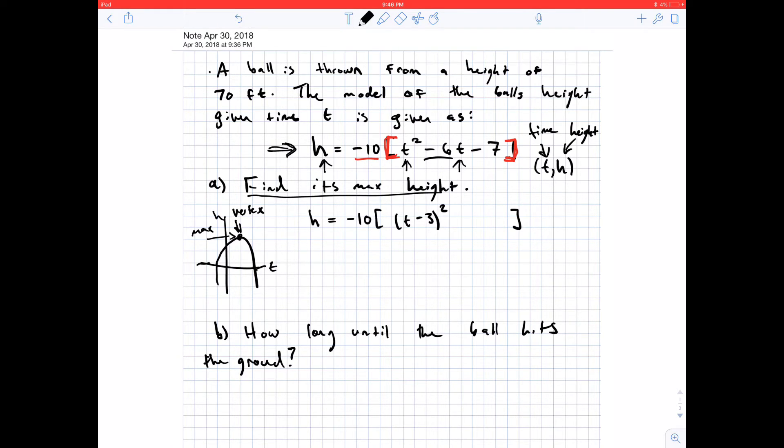And this constant here is going to be... Well, we know we want to get an exact copy of this equation down here. And I know that when I foil this out here, I'm going to get t squared minus 6t plus 9. But I don't want this plus 9 here.